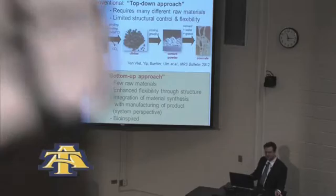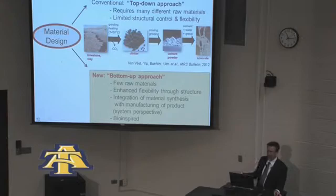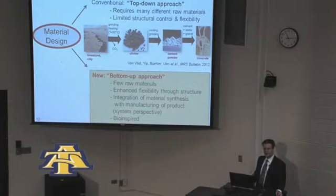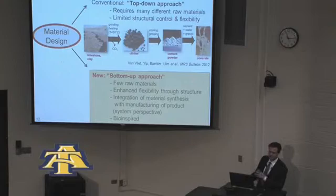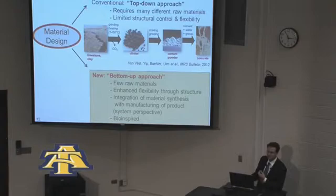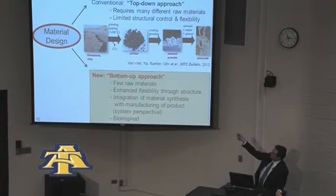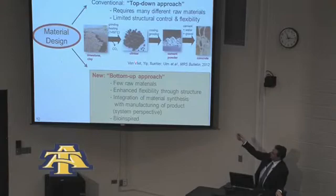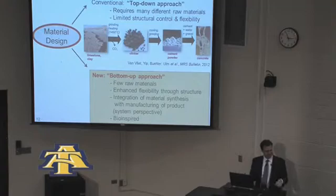We haven't fully figured out exactly how the spider builds the web. Engineering is often done by taking things from nature, grinding and heating them. Concrete, for example, is made by taking limestone, grinding and heating it. In this process, not only do we need a lot of energy, but we also produce significant amounts of CO2 — both from burning coal for energy and from the chemical reaction that makes concrete itself. It's very expensive and inflexible.